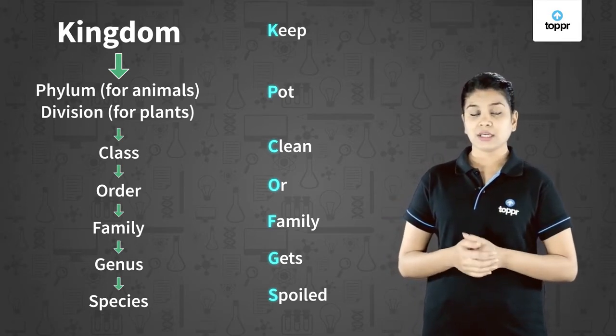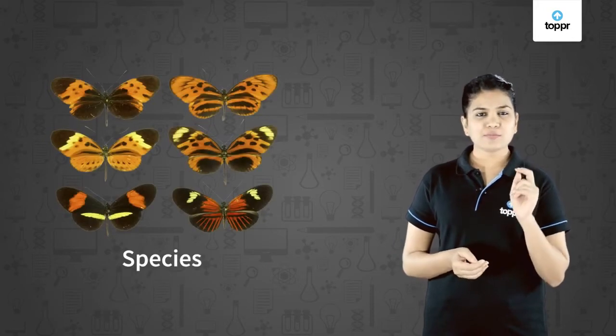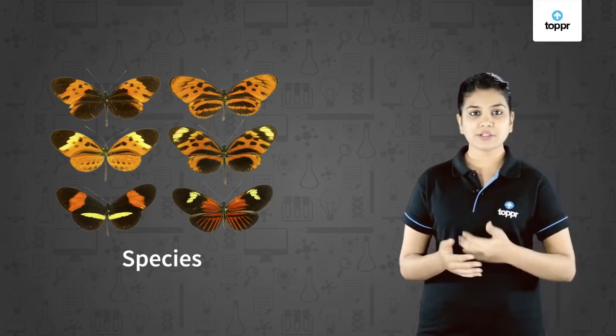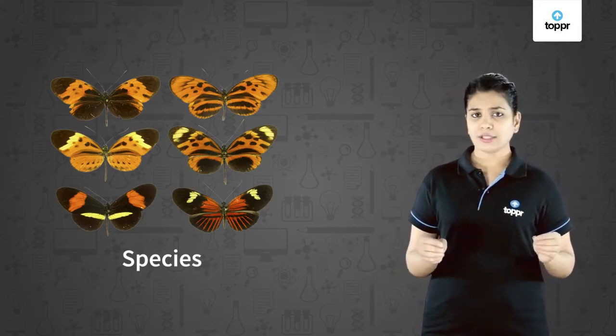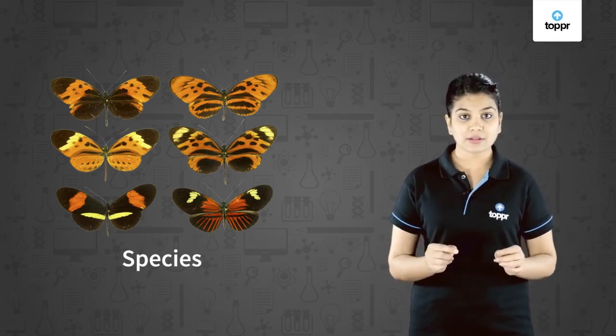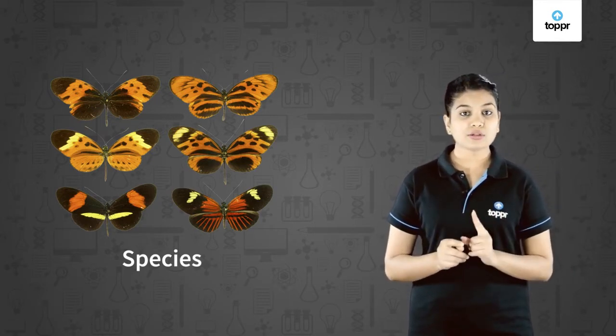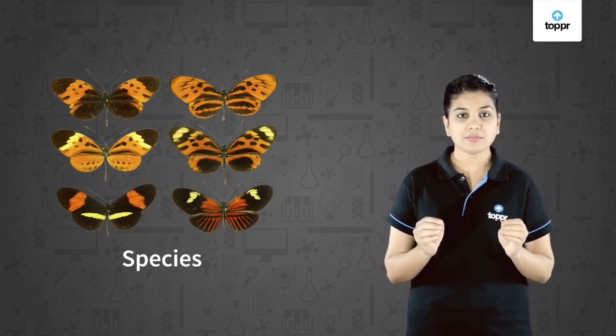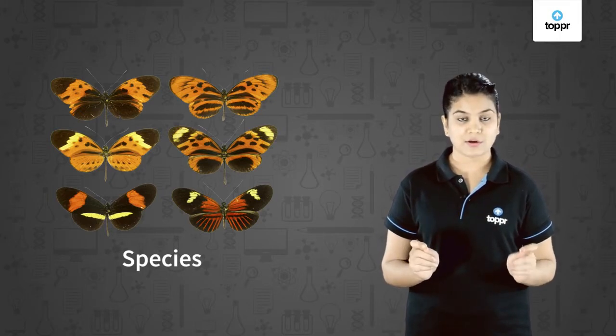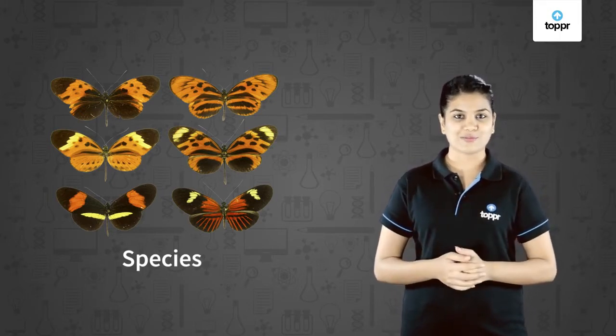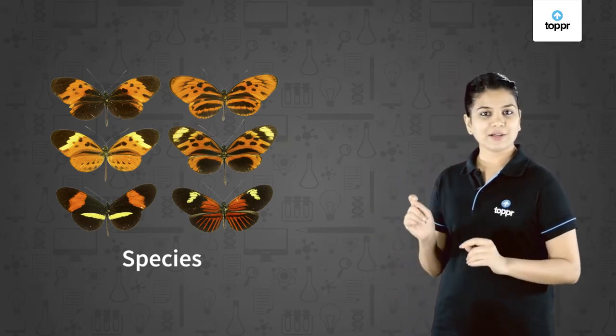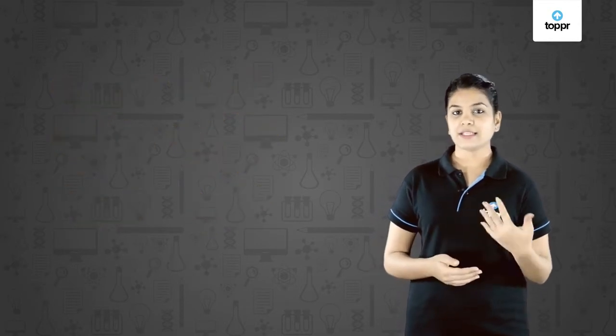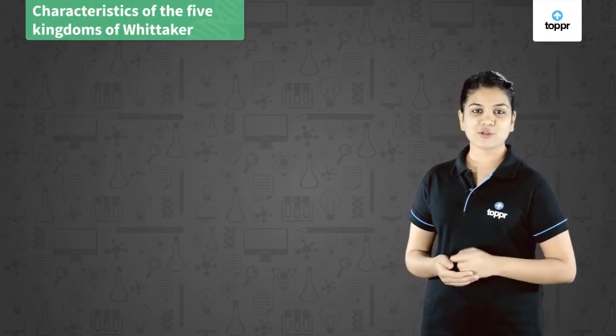We have seen that species is the smallest unit of classification. All the organisms which are similar and can breed belong to the same species. These organisms usually have the same number of chromosomes. So this was the hierarchy of classification.